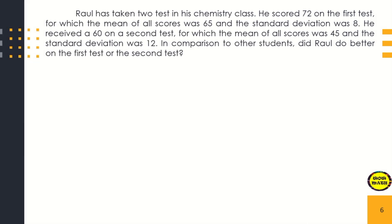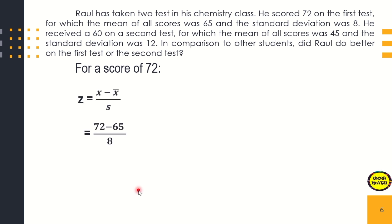Another application: Raul has taken two tests in his chemistry class. He scored 72 on the first test, for which the mean of all scores was 65 and the standard deviation was 8. For the first test: 72 minus 65 over 8, that is equal to 0.875.